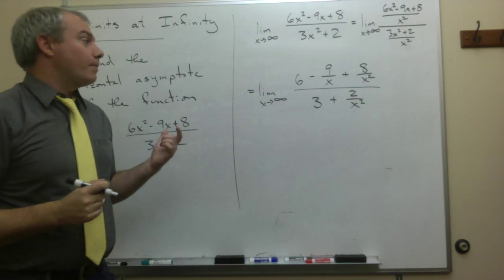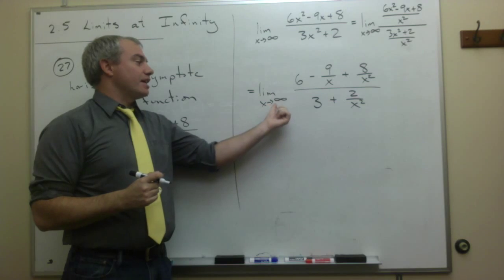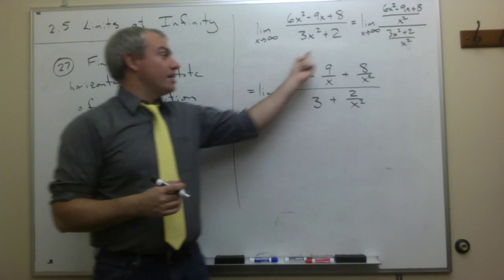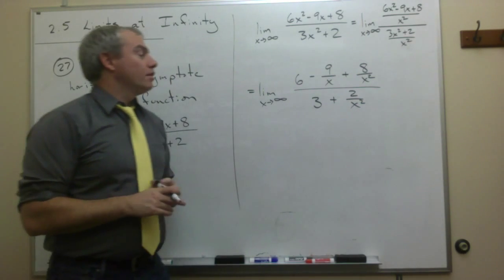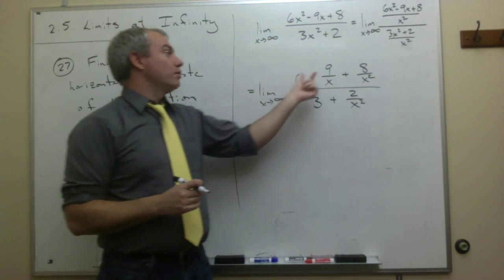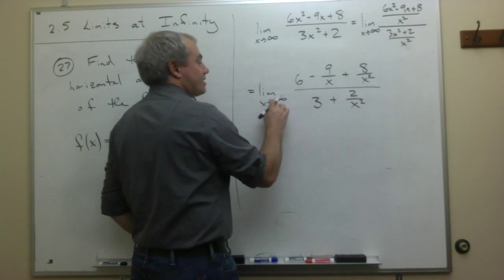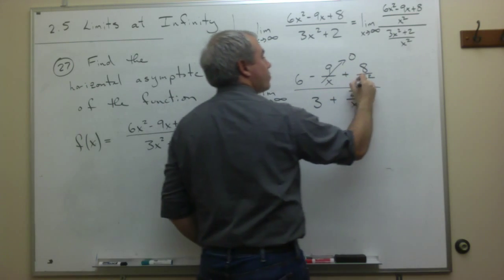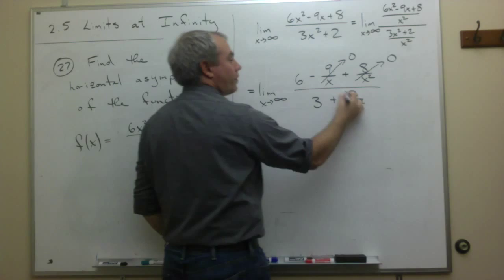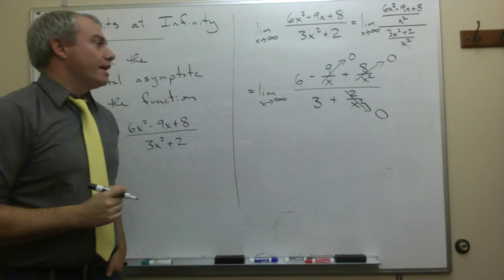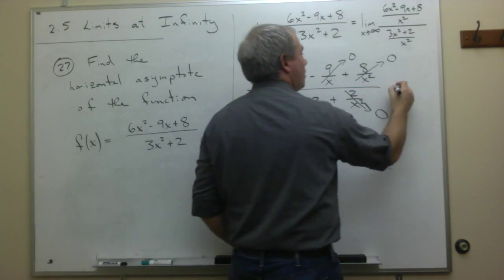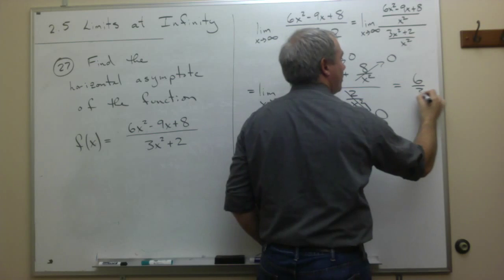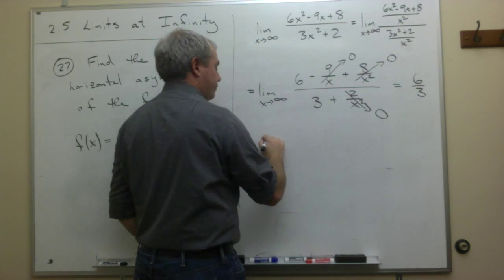All right, now we're in a better position because now if I plug in that x is getting close to infinity, or x is getting quite large, then there are some things in this fraction that are getting small, like 9 over x. If x is getting big, 9 over x is getting small, 8 over x squared is getting small, and 2 over x squared is getting small. So what's left over? Basically, I just have a 6 on the top, and I have a 3 on the bottom, or 2.